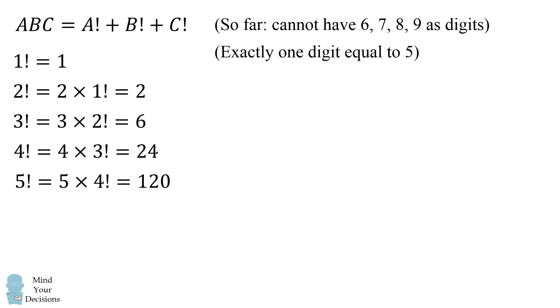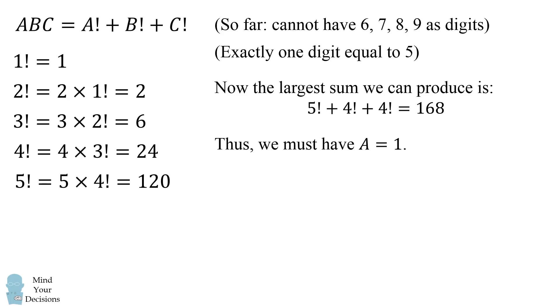Now what can we do from here? The largest sum we can produce is five factorial plus four factorial plus four factorial which equals 168. This means the digit A has to be equal to one.